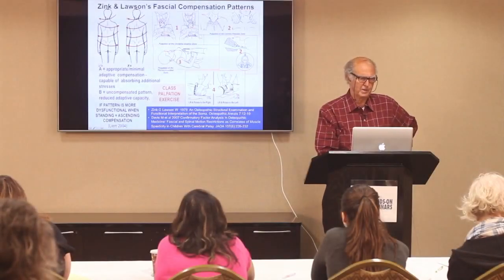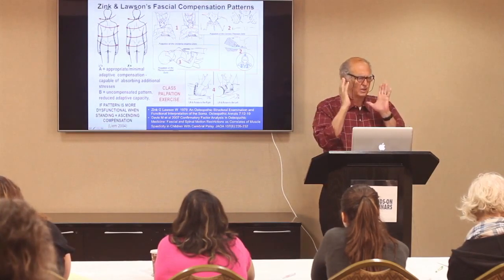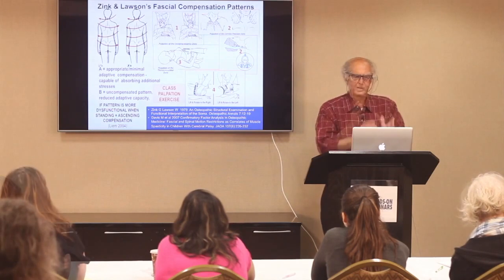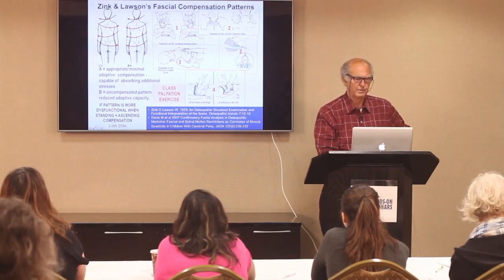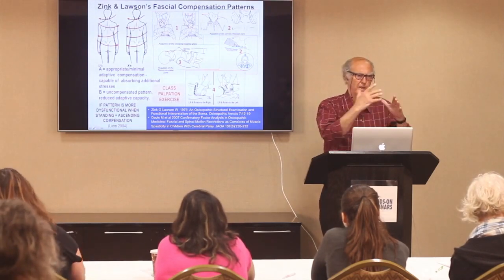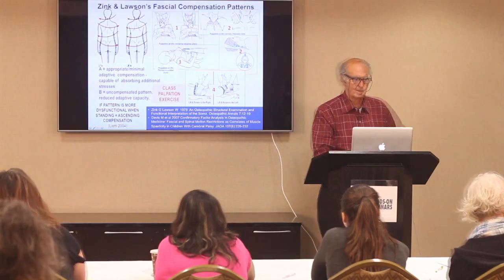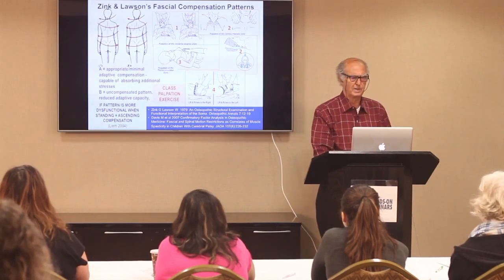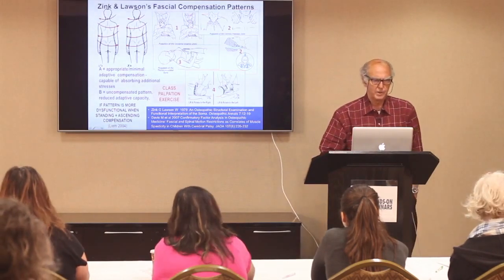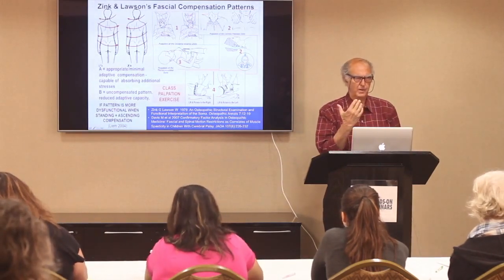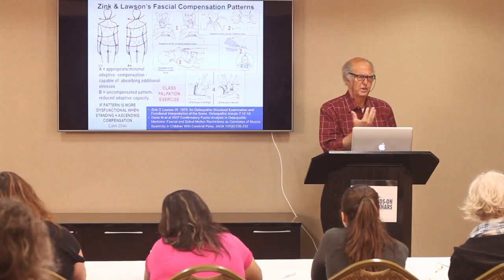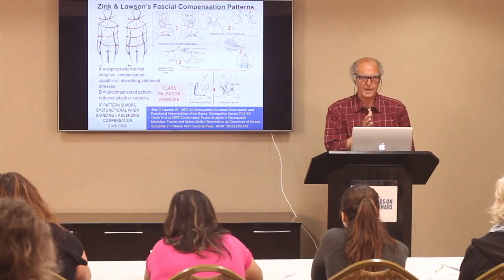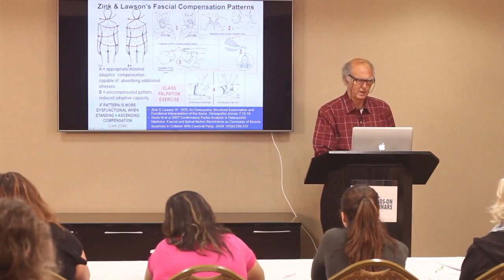There is a common propensity for rotation to the left being more free than the right in about 80% of the population. That's called the common compensatory pattern, and it's mirrored by the fascial tissues. Where you have all the directions of rotation in one direction, it tends to represent a reduced ability of those tissues to respond to change, to stress. They won't absorb and modify and adapt as well as tissues where there's an alternating pattern.